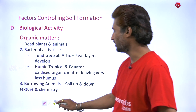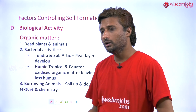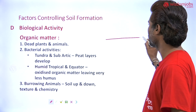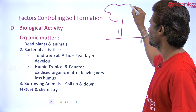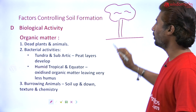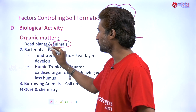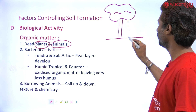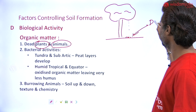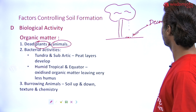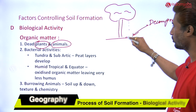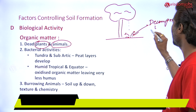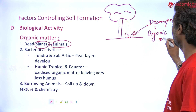We are talking about biological activity — what it actually does and how it enhances the soil. Let's consider this as a tree. Biological activity means something provided by living beings like plants and animals. When the tree's leaves fall down, they get decomposed by decomposers. The decomposer acts on those leaves and releases organic matter.